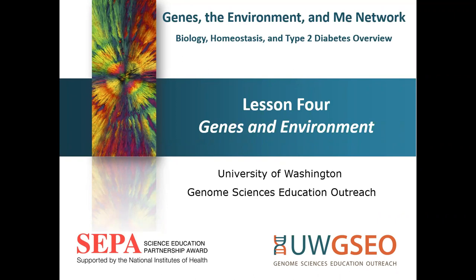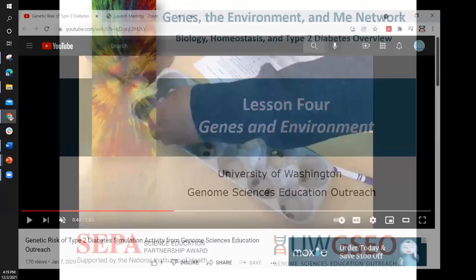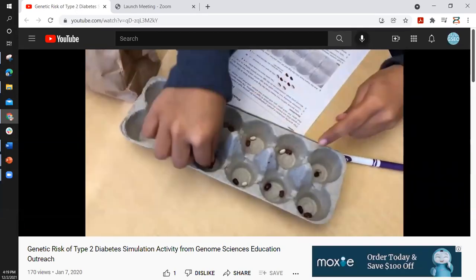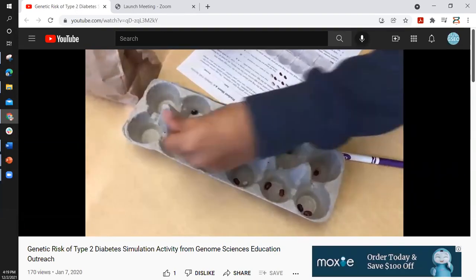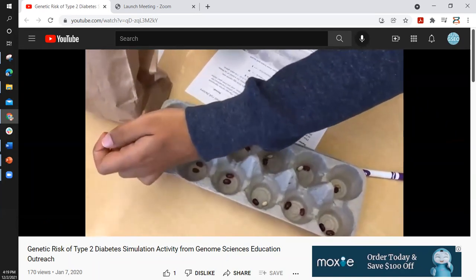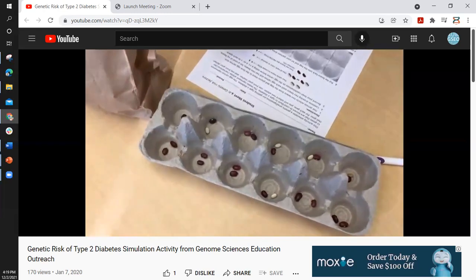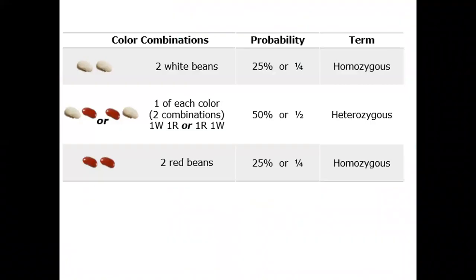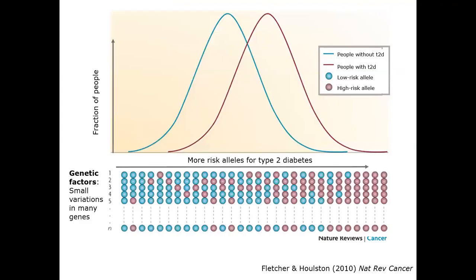In this lesson, students first generate a genetic risk score. To do so, students simulate their risk by drawing beans out of a bag or flipping a coin to represent 12 different allele combinations that increase or decrease their risk. Students learn about probability and how variations in hundreds — if not thousands — of genes contribute to complex diseases like type 2 diabetes.